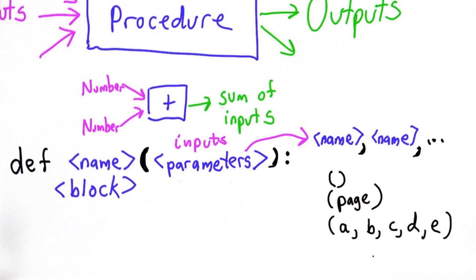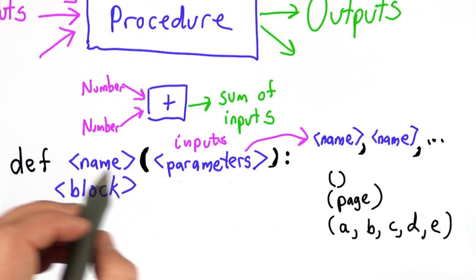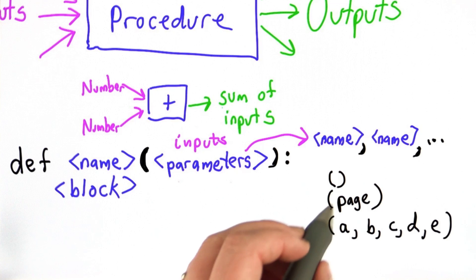So we could have five inputs. Give them the names A, B, C, D, E. This is not a good idea usually to give our parameters meaningless names. That makes it hard to remember what they are when we use them in the code that we write as the block. We're much better off having parameters with names like page. They'll remind us what they mean.